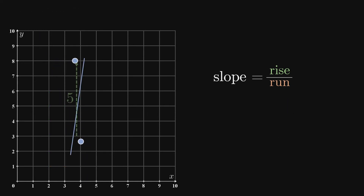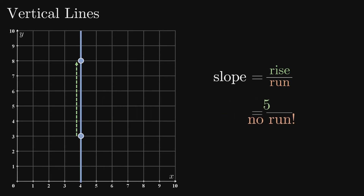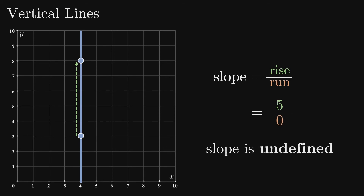What about vertical lines? These troublemakers have a run of zero, which leads to a problematic division by zero when calculating the slope. We say that the slope of a vertical line is undefined. You could say that these lines have so much slope that we can't describe it with a number.